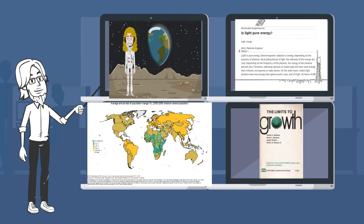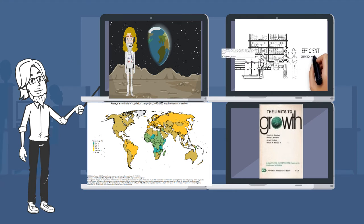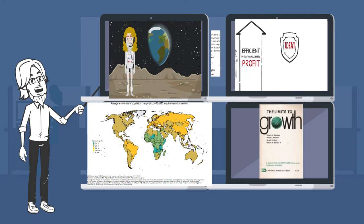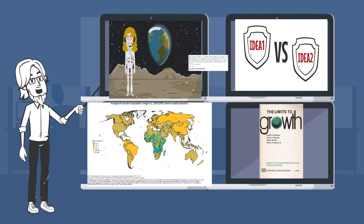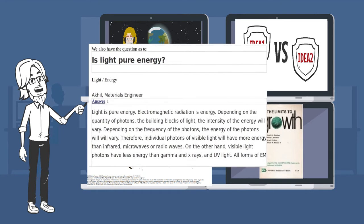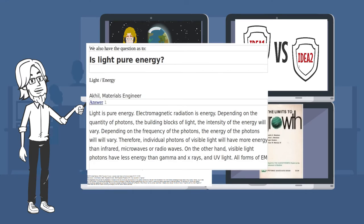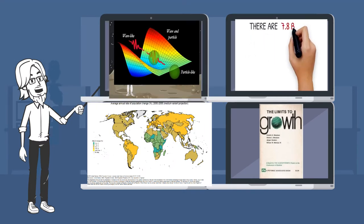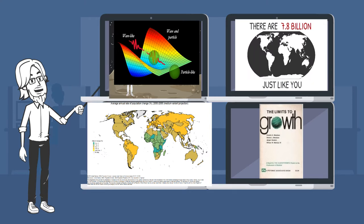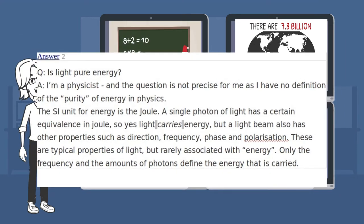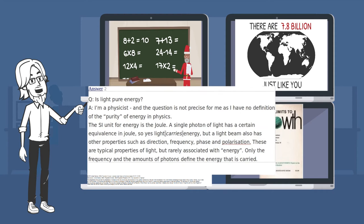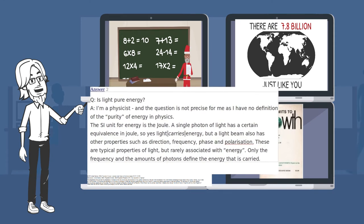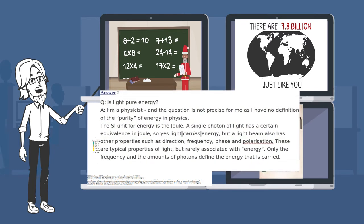Light, energy. Akil, materials engineer. Answer 1: Light is pure energy. Electromagnetic radiation is energy. Depending on the quantity of photons, the building blocks of light, the intensity of the energy will vary. Depending on the frequency of the photons, the energy of the photons will vary. Therefore, individual photons of visible light will have more energy than infrared, microwaves, or radio waves. On the other hand, visible light photons have less energy than gamma and x-rays and UV light. All forms of EM radiation are pure energy. There are also other forms that can be considered pure energy as well. Velocity is kinetic energy, heat is thermal energy, and so on. Not all types of energy are capable of easily doing work on other environments, and therefore not all forms of energy are usable.